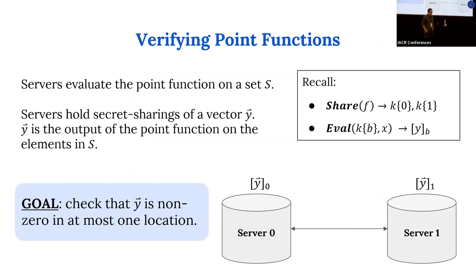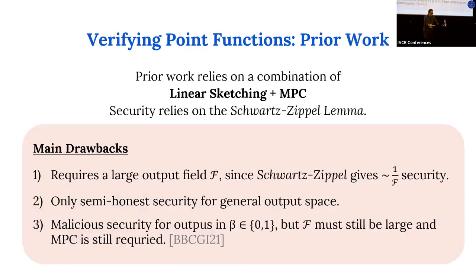How do we verify that a point function share is well-formed? We start with the servers having shares of some output vector y — the set of evaluations on whatever points the servers have chosen. What the servers are really checking is that y is only non-zero in at most one location, i.e., y is the truth table of some point function. Prior works for this are based on linear sketching and NPC, and all rely on the Schwartz-Zippel lemma.